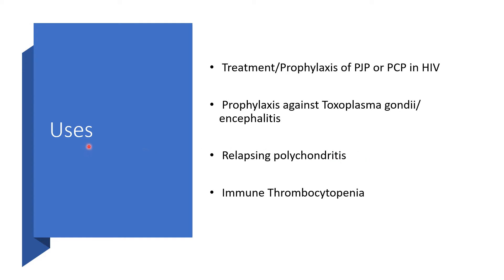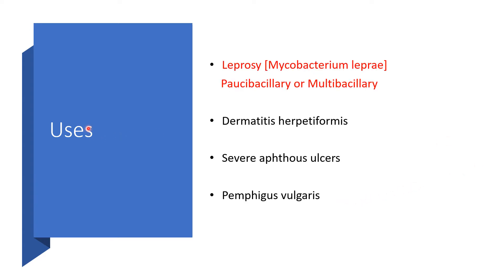Uses of Dapsone: for treatment and prophylaxis of Pneumocystis jirovecii pneumonia or Pneumocystis carinii pneumonia in HIV, prophylaxis against Toxoplasma gondii encephalitis, in relapsing polychondritis, and immune thrombocytopenia. Dapsone is also used — which is what many people expect when they hear the word Dapsone — for leprosy, that is Mycobacterium leprae, either paucibacillary or multibacillary.